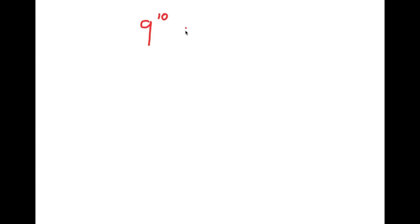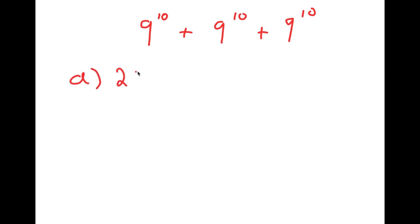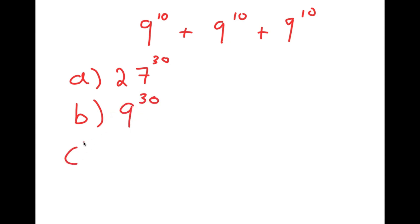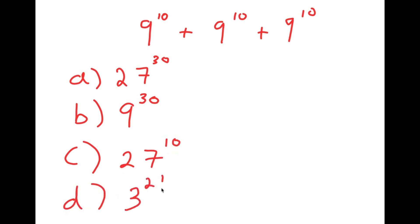In this video, I'm going to be solving the problem 9 to the power of 10 plus 9 to the power of 10 plus 9 to the power of 10. For this problem, I actually have 4 option choices. For A, I have 27 to the power of 30. For B, I have 9 to the power of 30. For C, I have 27 to the power of 10. And for D, I have 3 to the power of 21. Let's go through all these option choices and see if they're right or not.